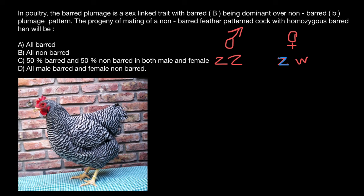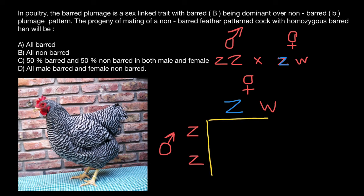Now let's build a simple Punnett square and see what the progeny of such a cross are going to be. The female genotype is here on the top — her genotype is Z and W — and this is the female side. Here on the side is going to be the male genotype, and we know that he's double homozygous. Now let's build the simple Punnett square and find the genotypes and phenotypes of their progeny.